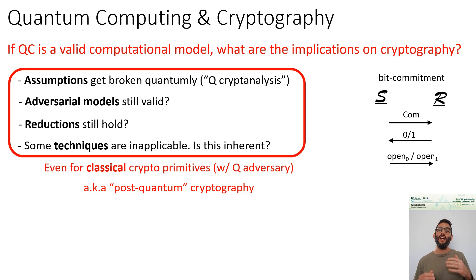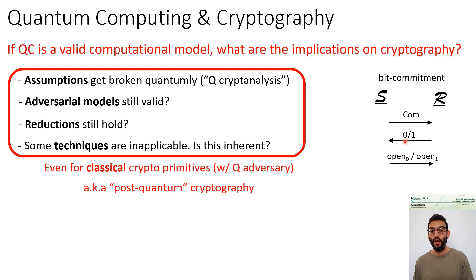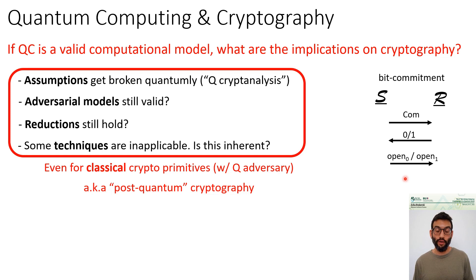In the classical regime, these two formulations are easily shown equivalent. In the security proof, if we have a sender that can answer both a 0-challenge and a 1-challenge, we can record the sender's state before the challenge, run it on challenge 0 to get an opening, then go back to that point and run it on challenge 1. So we can extract both openings.